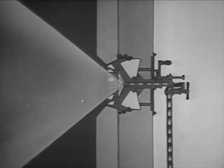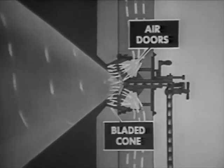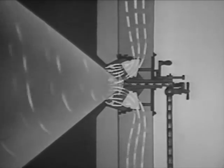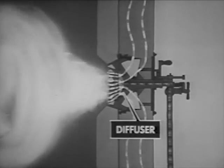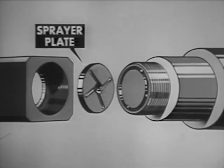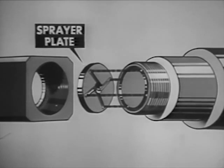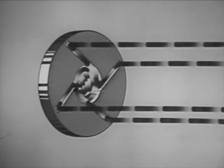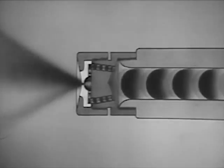Meantime, in the burner register, air provided by the force draft blower is given a rapid rotating motion by the air doors and bladed cone and mixed with the oil spray. The mixture of oil and air enters the furnace where combustion takes place. The diffuser prevents the air blast from blowing the flame from the atomizer tip. Now let's see the action of the sprayer plate in more detail in an exploded view. You can see how the oil passages in the atomizer nozzle guide the oil into the slots of the sprayer plate, how the slots give the oil a very rapid whirling motion in the whirling chamber, and how the whirling oil emerges from the sprayer plate orifice, or opening, as a hollow cone of mist-like oil particles.